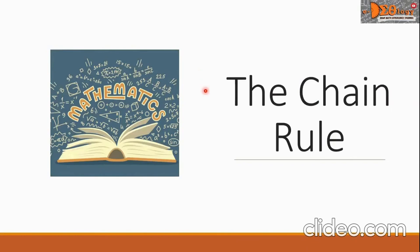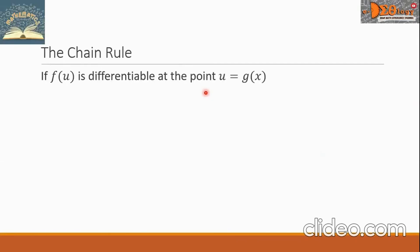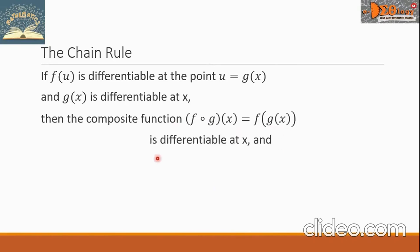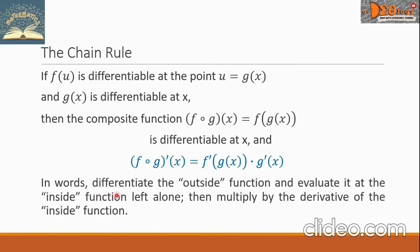Hi, everyone. Today we're going to study the chain rule. If f of u is differentiable at the point u equals g of x, and g of x is differentiable at x, then the composite function f composite g of x equals f of g of x is differentiable at x, and f composite g prime of x equals f prime of g of x times g prime of x. In words: differentiate the outside function and evaluate it at the inside function left alone, then multiply by the derivative of the inside function.